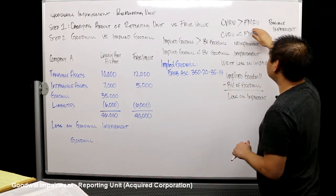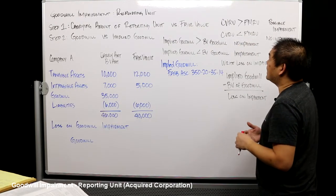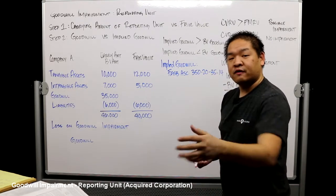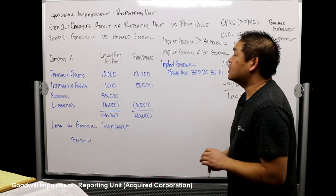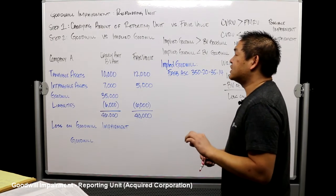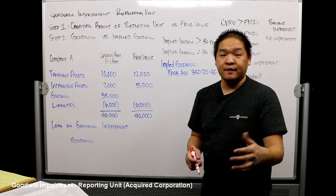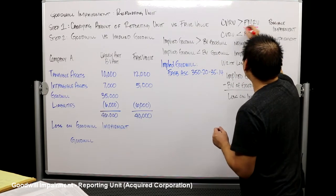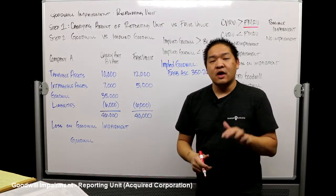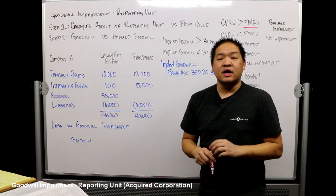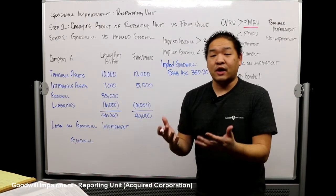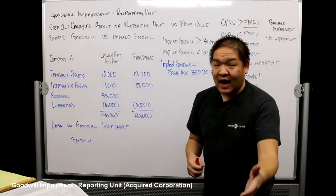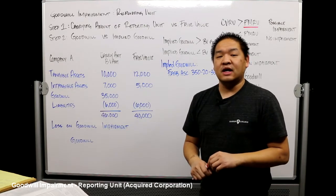If it fails that first test — where there is a possible impairment because the fair value is less than the carrying value — then we go to step two. In step two we compare goodwill versus implied goodwill. We calculate this implied goodwill based on the fair market value of the reporting unit, as if we were buying that reporting unit again at fair value today.